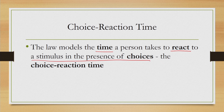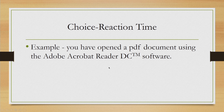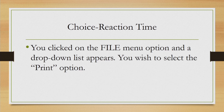In other words, the law models the choice reaction time. To understand this with an example: suppose you are asked to open a PDF document and take a printout of it. When you open the document you get a screen showing Adobe Acrobat Reader. Once the document interface is there and you want to print it, you have to select the file menu option and select the print option from the drop-down list that appears.